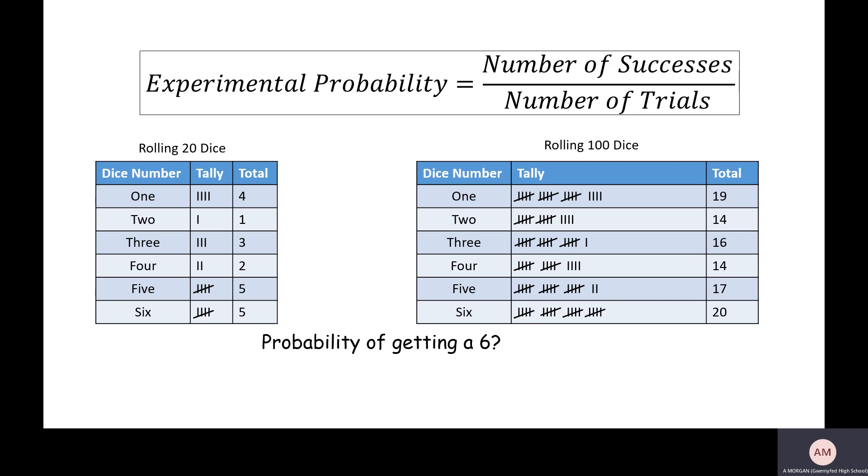So for instance, let's imagine that we're just checking the probability of rolling a dice. We know the answer. We know that the probability of getting a six on a dice is one in six. But we're just checking experimental probability to see what we actually get.